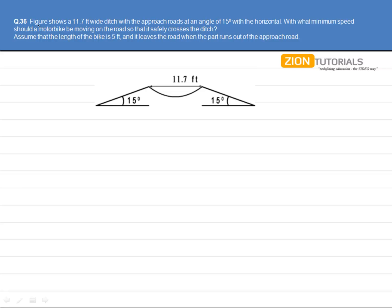As the question says, figure shows a 11.7 feet wide ditch with the approach roads at an angle of 15 degrees with the horizontal.